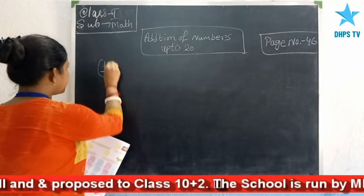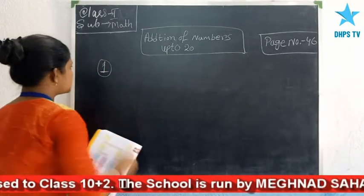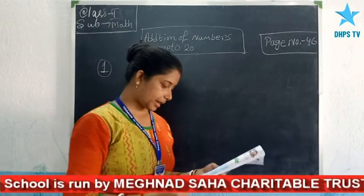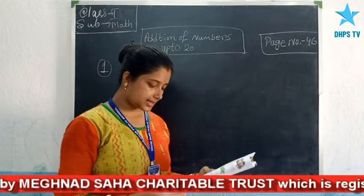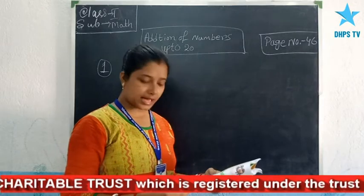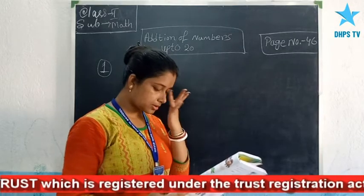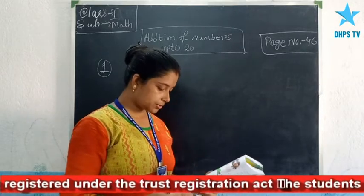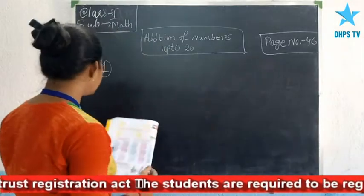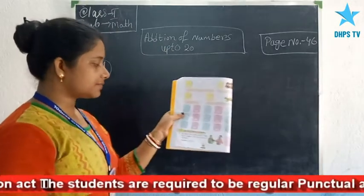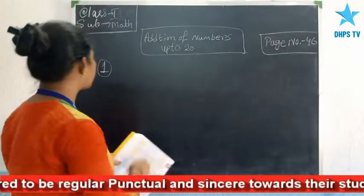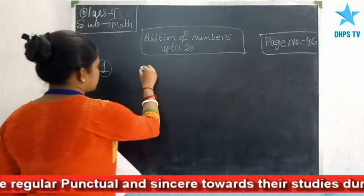See the problem. So let's read the problem. Mr. C has 6 apples and Mr. Money has 5 mangoes. How many fruits do they have? So, Mr. C has 6 apples.